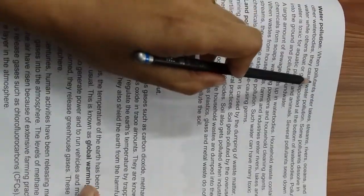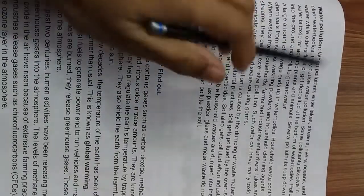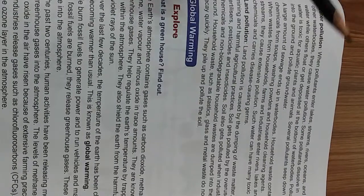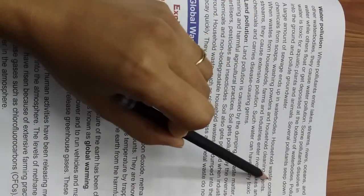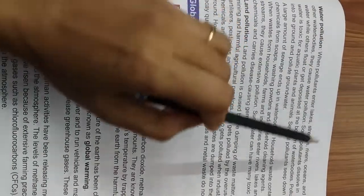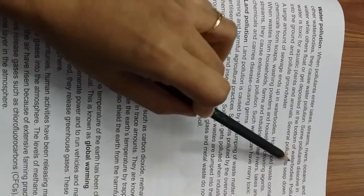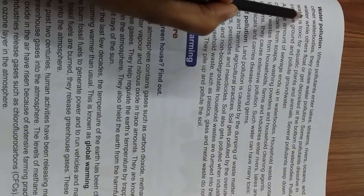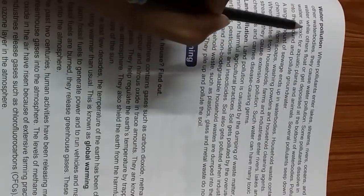Water pollution. Water pollutants enter lakes, streams, rivers, oceans, and other water bodies, causing water pollution. Some pollutants dissolve in water, while others float or get deposited at the bottom of water bodies.